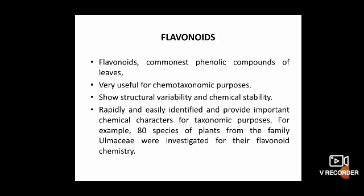For example, 80 species of plants from the family Ulmaceae were investigated for their flavonoid chemistry by Gielen-Nasi in 1978. The majority of the species contain flavonols, but a few species have glycoflavonols, and these two types of flavonoid compounds are never present together in any species. In most classical systems of classification, the family Ulmaceae is divided into two subfamilies called Ulmoideae and Celtoideae, which are also distinguishable by their flavonoid chemistry. Therefore, morphological criteria combined with flavonoid dichotomy can be used to divide the family into two distinct families.